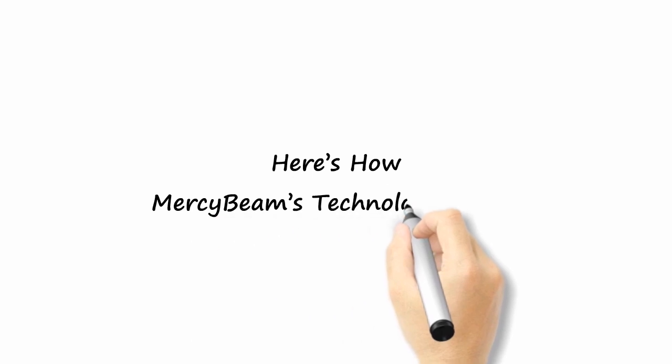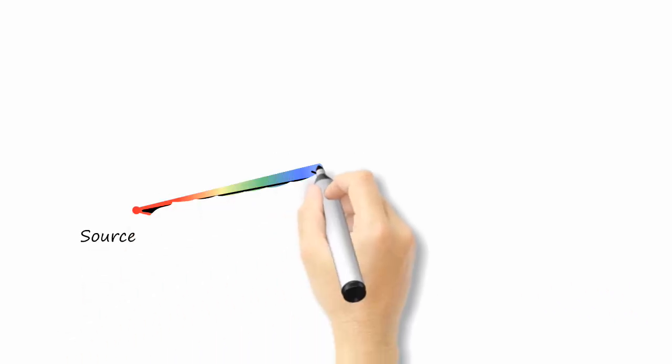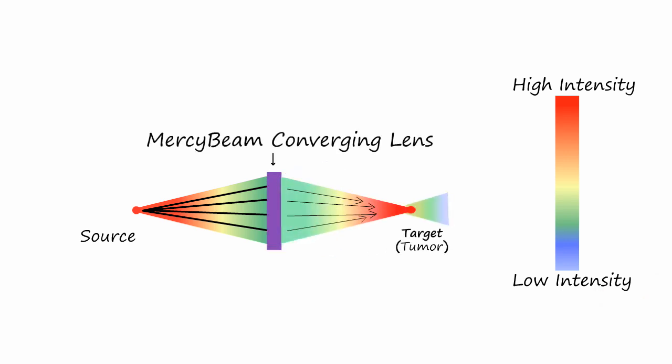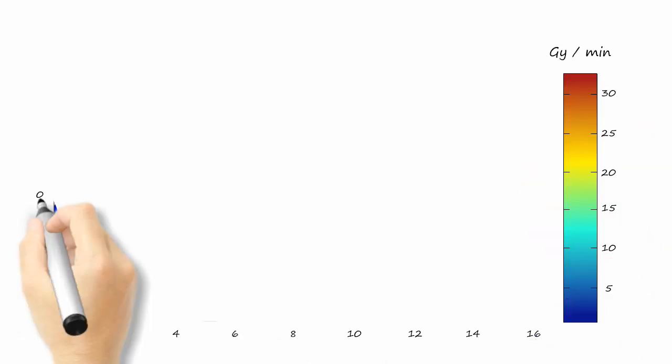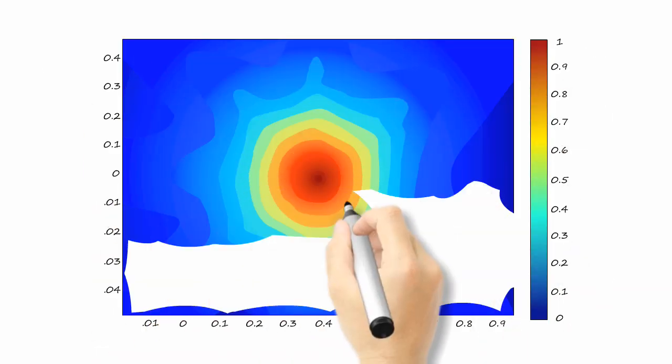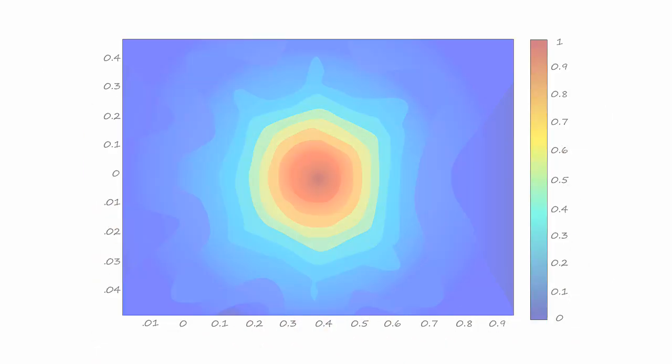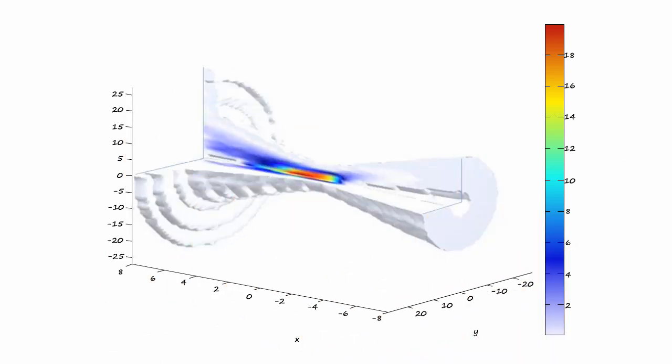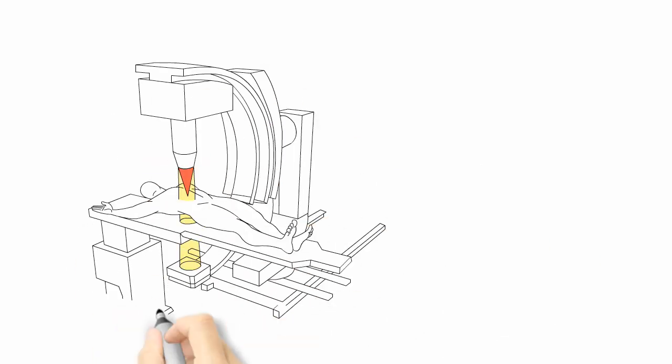Here's how MercyBeam's technology works. First, the lens collects most of the X-rays emanating divergently out of the X-ray tube and converges it toward the target location. The lens simultaneously removes low-energy photons that would be absorbed by patient skin. The convergence increases the therapeutic dose delivered at the target location, while the volume prior and after the tumor receives a very low dose or no dose at all. The cancer is treated accurately with a concentrated radiation at a fraction of the cost of all other methods.